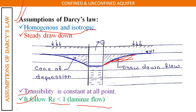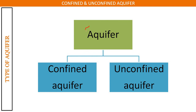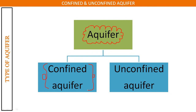The aquifer is a layer or medium which stores or transmits water. There are two kinds of aquifer we will see and derive: first is the confined aquifer, and second is the unconfined aquifer. Let us start with the derivation for the unconfined aquifer.